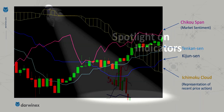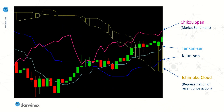Last time, I covered these two middle lines — the Tenkan-sen and the Kijun-sen — and looked at how these are used to help inform the entry and exit signals for a trading strategy. If you missed that, then you might find it useful to also watch the previous episode.